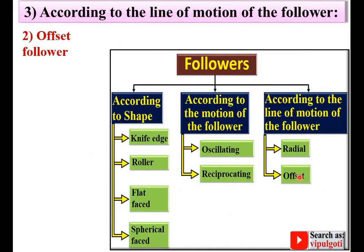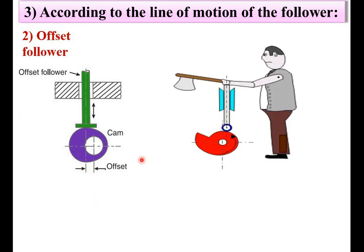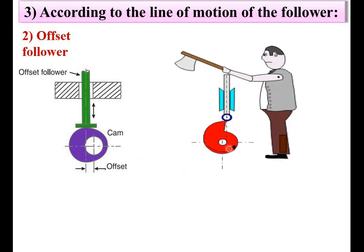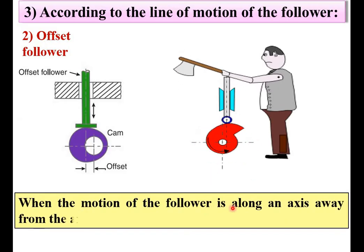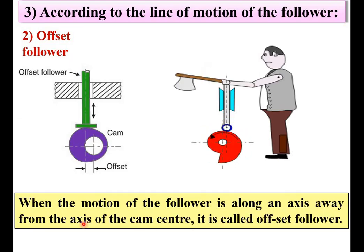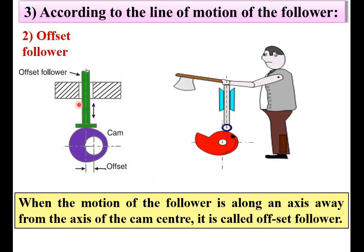Next, the offset Follower. Here you can see the line of action of the Follower and the axis of the CAM have an offset distance. When the motion of the Follower is along an axis away from the axis of the CAM center, this distance is known as the offset distance, and it is called an offset Follower.